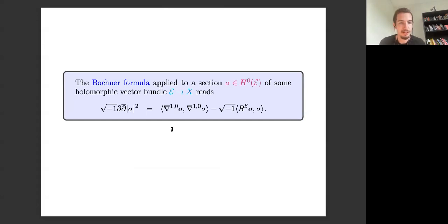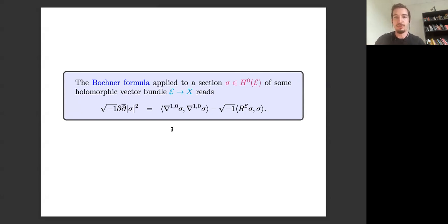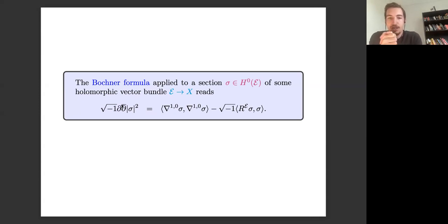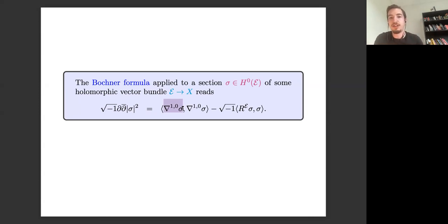This is my starting point — I should emphasize there are many ways to approach these calculations, but what I brought to the subject was a unified way of looking at all forms of the Schwartz lemma in the literature. You start with the general Bochner formula: if you have a holomorphic vector bundle and take a holomorphic section of that bundle, then the complex Hessian — meaning i∂∂̄ of the norm squared of this holomorphic section — is given by the (1,0)-part of the Chern connection acting on this bundle, minus the curvature acting on this section.